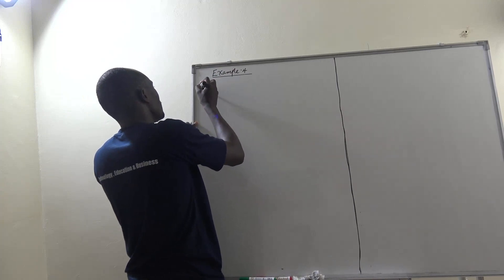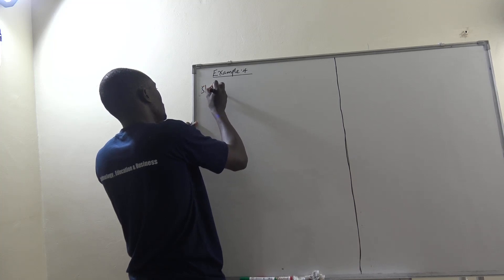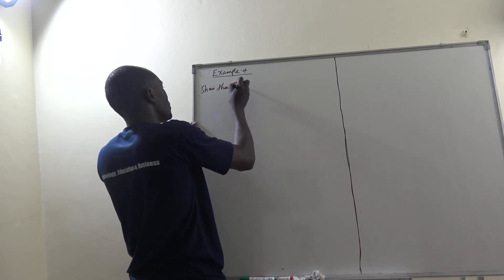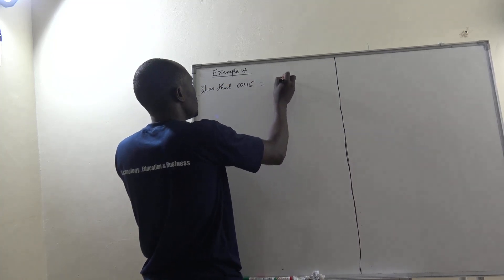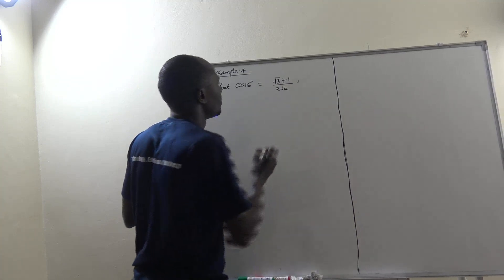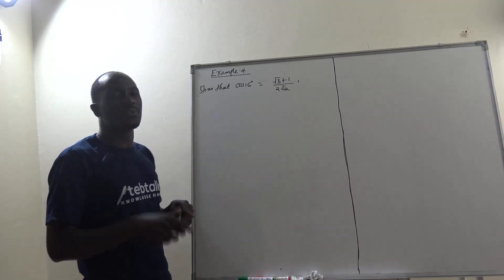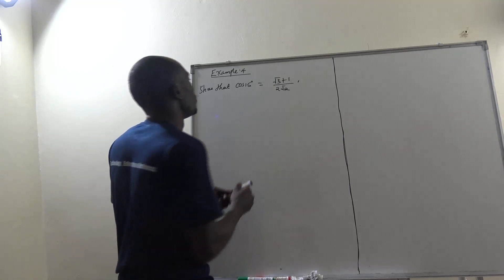Example 4 says show that cos of 15 degrees is the same as root 3 plus 1 all over 2 root 2. So we want to show that cos of 15 is the same as root 3 plus 1 over 2 root 2.